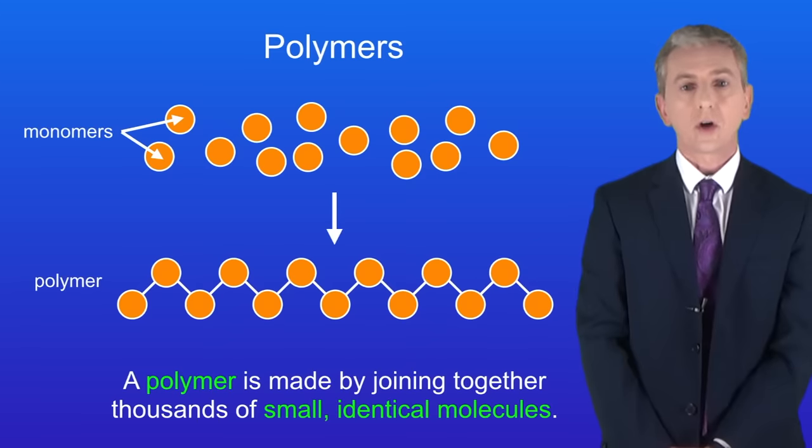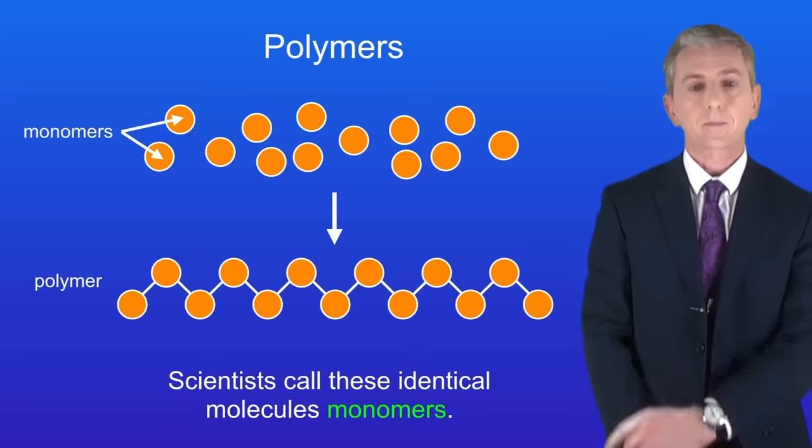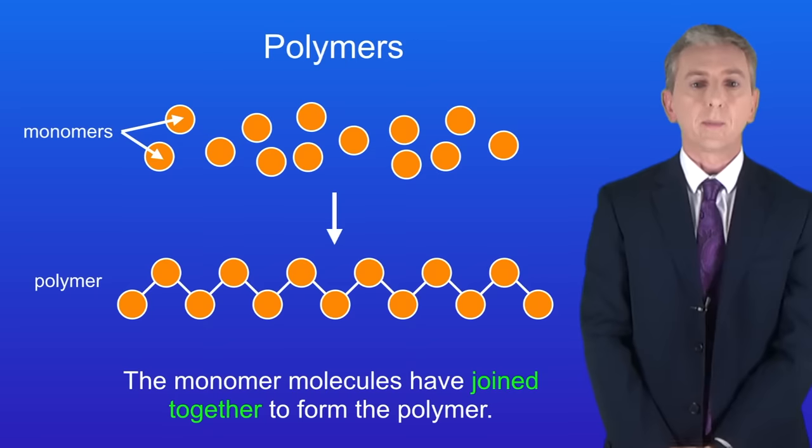A polymer is made by joining together thousands of small identical molecules, and scientists call these identical molecules monomers. I'm showing you the formation of a polymer here. As you can see, the monomer molecules have joined together to form the polymer.